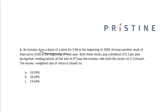An investor buys a share of stock for $80 at the beginning of year 2009. He buys another share at a price of $100 at the beginning of the next period. Both stocks pay a dividend of $2 per year during the holding period. At the end of the second year, the investor sells both stocks for $110 each. The money weighted rate of return is closest to?